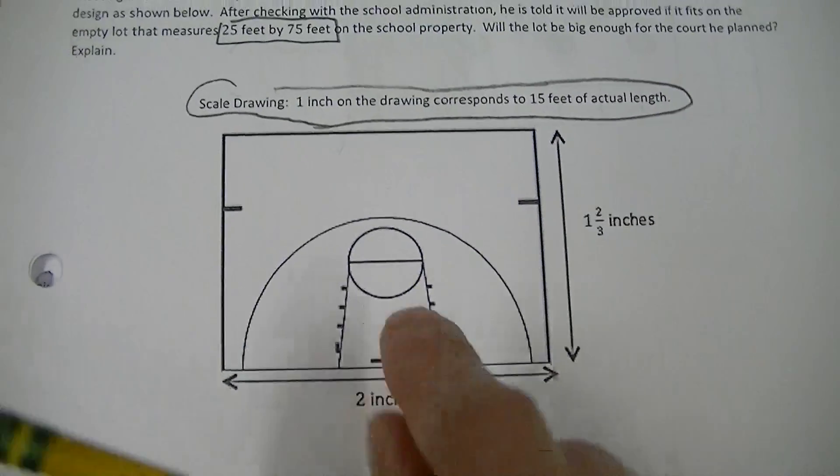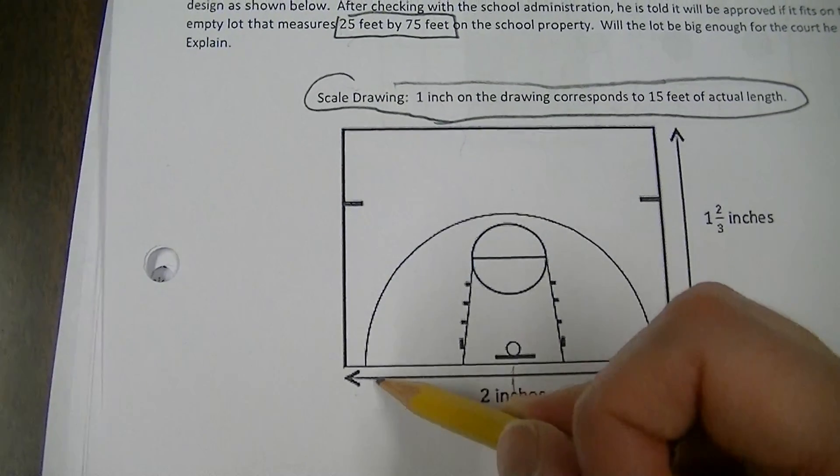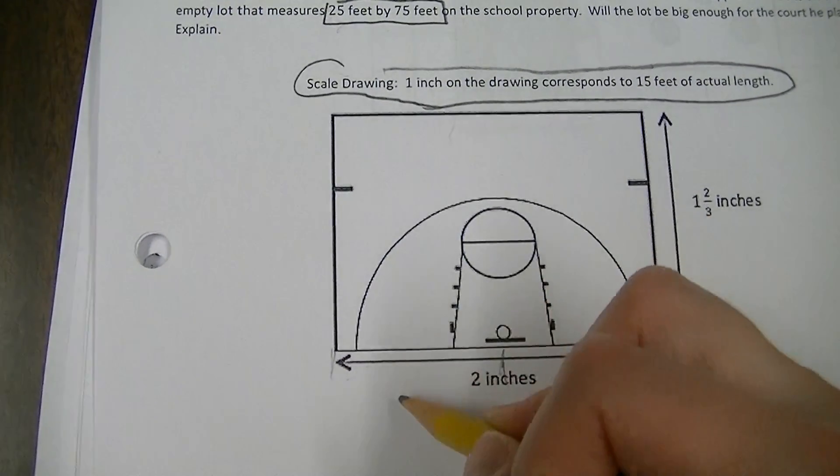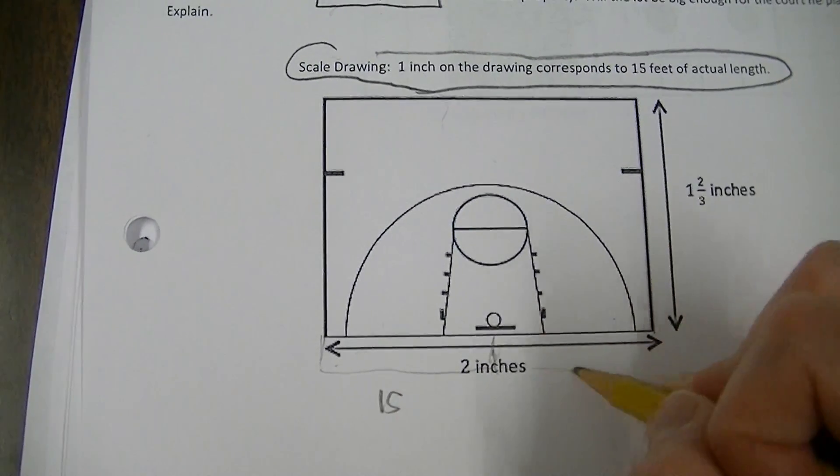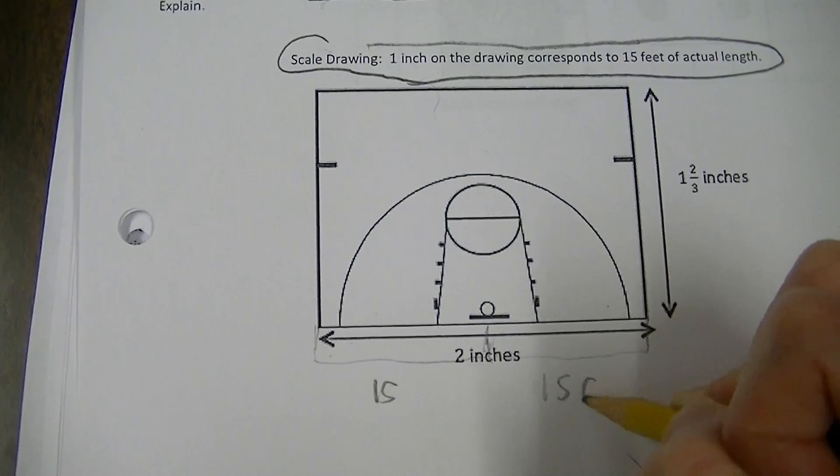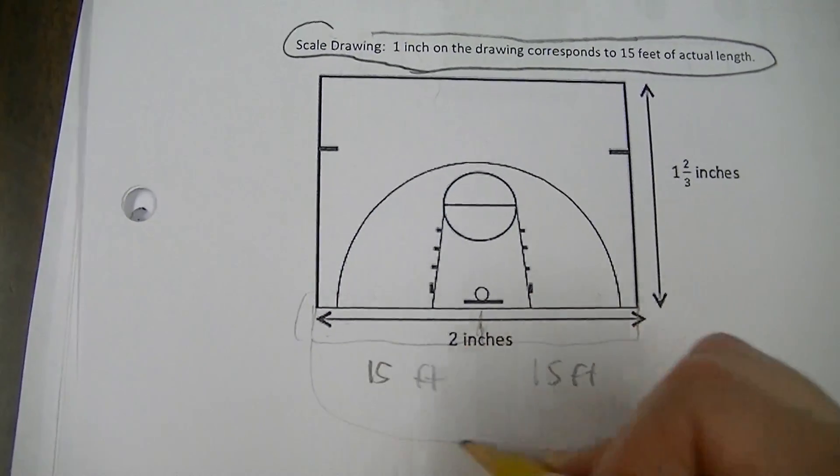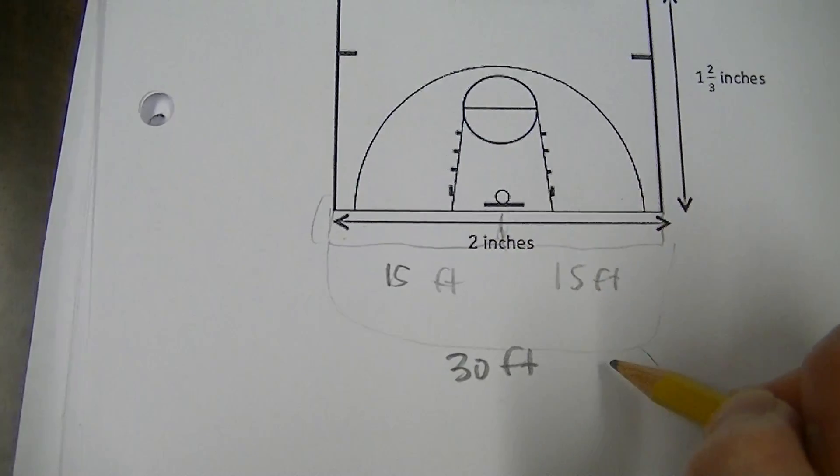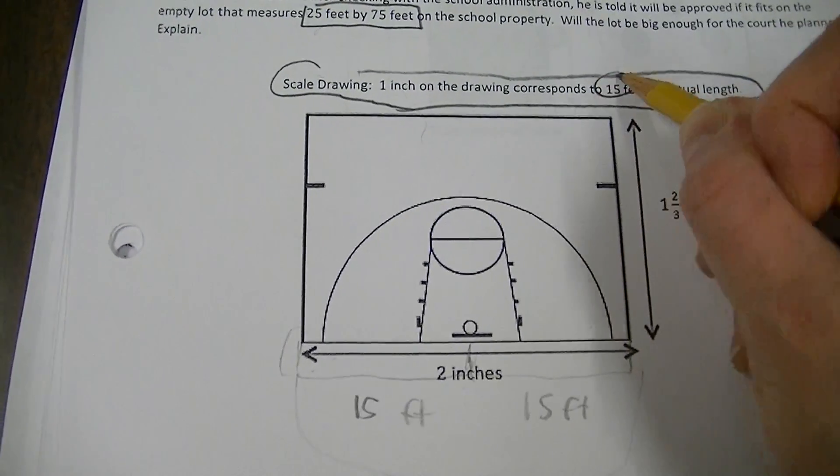So one inch, one inch on the drawing, like from here to here, that right there is going to be 15 feet because that's one inch. So I see that that would be 15 feet right here. This right here would also be 15 feet. So this whole length right here would in turn be 30 feet.